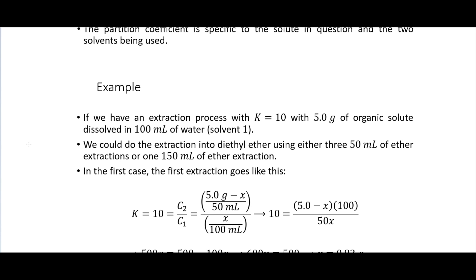So here is an example. And so in this example we're going to be looking at two different ways of actually doing this extraction. So we have an extraction process. Say we have a partition coefficient that is 10 and we have 5 grams of an organic solute dissolved in our 100 milliliters of water which will be our solvent 1. So the two ways we could do this extraction: we could either do three extractions with 50 milliliters of ether or we could do a single one with 150 milliliters of ether. And so what we'll see is that doing the three with the smaller volume is actually going to be better than doing a single one with the larger volume.